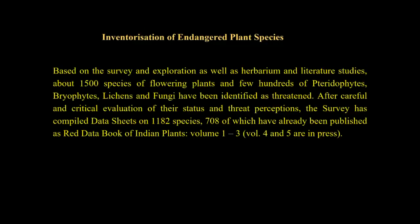In the inventorization of endangered plant species, based on BSI's studies, surveys, and exploration, a list of threatened species has been made, including both flowering and non-flowering plants — 1,500 species of flowering plants and hundreds of pteridophytes, bryophytes, lichens, fungi, and algae. Studies conclude that 1,182 species are under threat, of which data on 708 species has been published in the Red Data Book of Indian Plants in volumes 1, 2, and 3, while data on the remaining species is yet to be published. Parallel intensified searches have led to the rediscovery of many species.